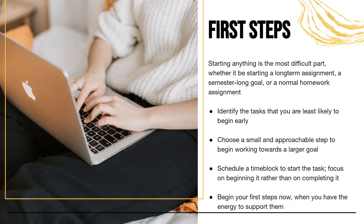Let's say your goal is working on job applications. The first step might be to set up a meeting with the Career Center, update your LinkedIn, or even just create your to-do list for the semester. You want to create a goal that's so small it can actually be approached and won't be ignored. Schedule a time block to start that task — and importantly, you want to schedule a time to begin it, not to complete it. Often we find it hard to work on things not due immediately because we're focused on the end product, when you really just need to activate the process, because once you've activated it, it's easier to keep working on it step by step.